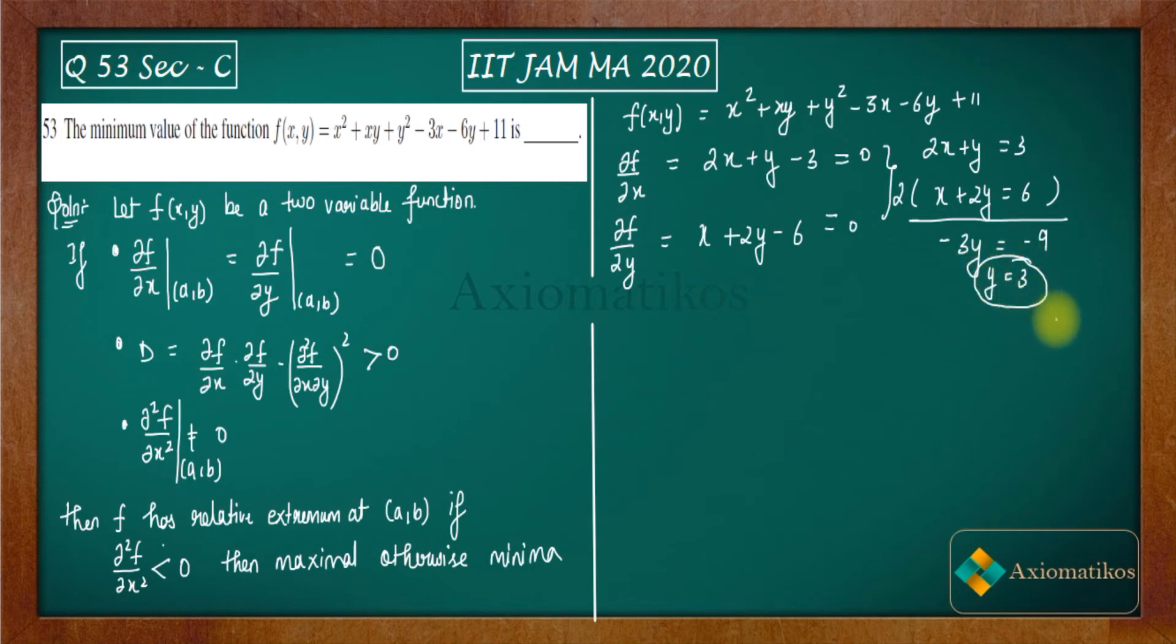So if y is 3, what will be x? x will be, just keep it here, you will get x as 0. So we got this coordinate (a,b) that is (0,3).